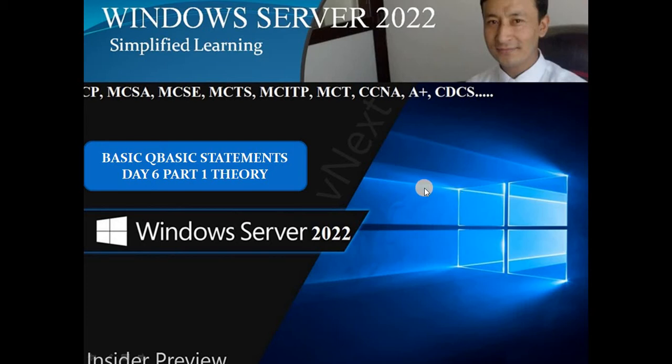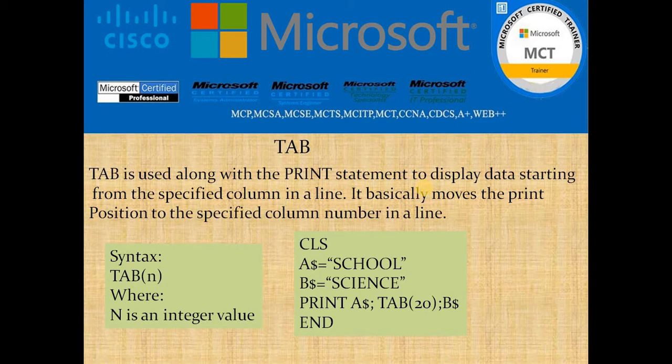The first statement for today is the TAB statement. You might have noticed that whenever we write a program in QBasic, it executes in the first row, first column — meaning by default the cursor is positioned at the first row, first column. If you want to execute something at a certain distance, meaning you would like to skip certain columns, in that case we need to use the TAB statement. TAB is used along with the PRINT statement to display data starting from a specified column in a line.